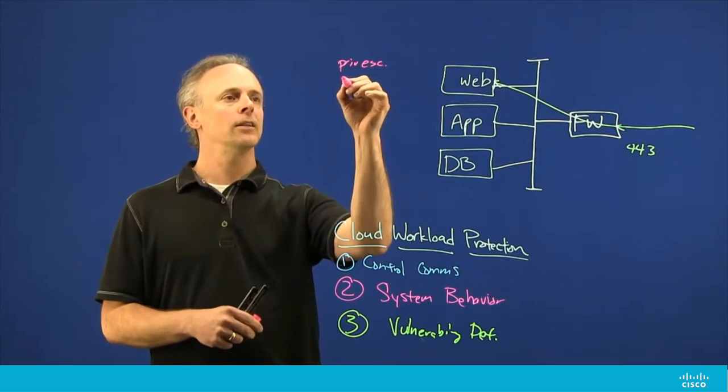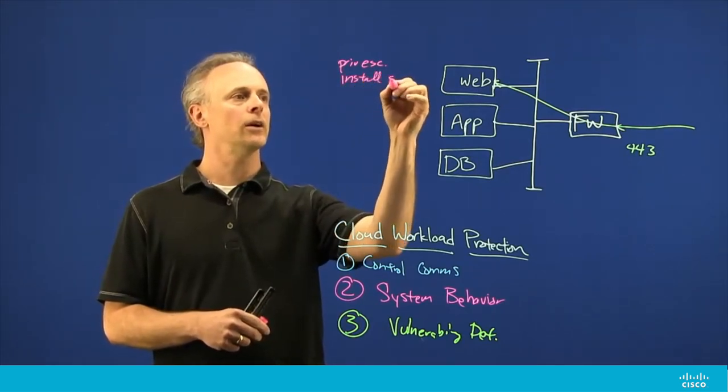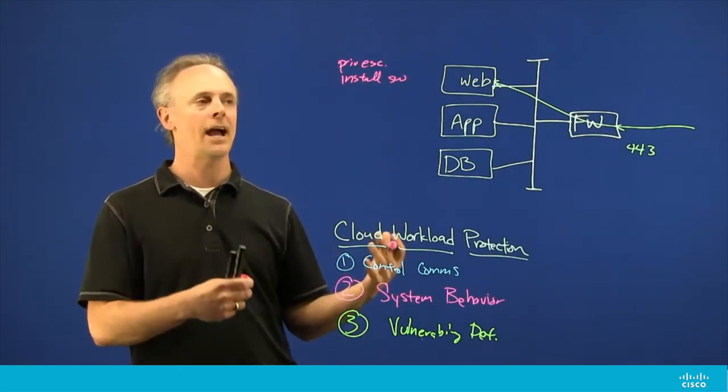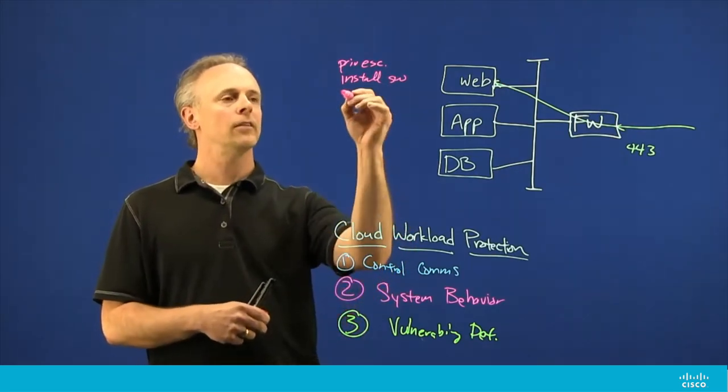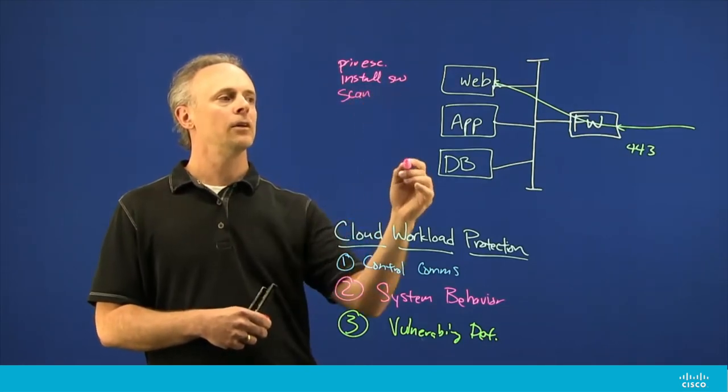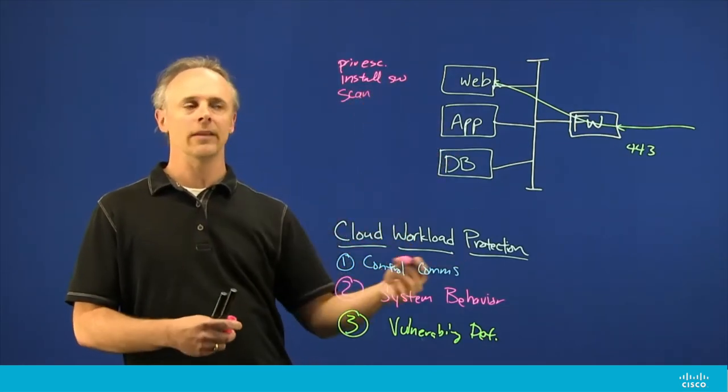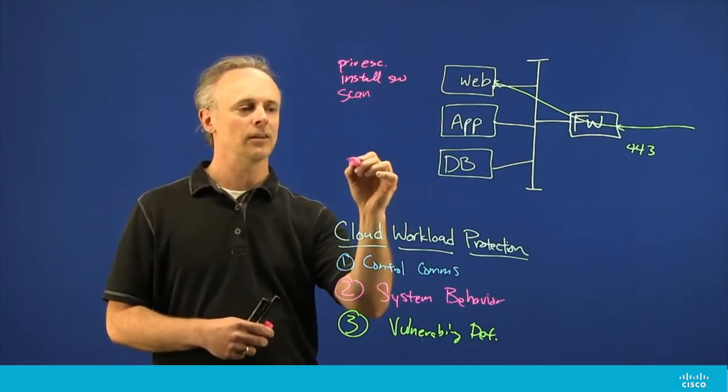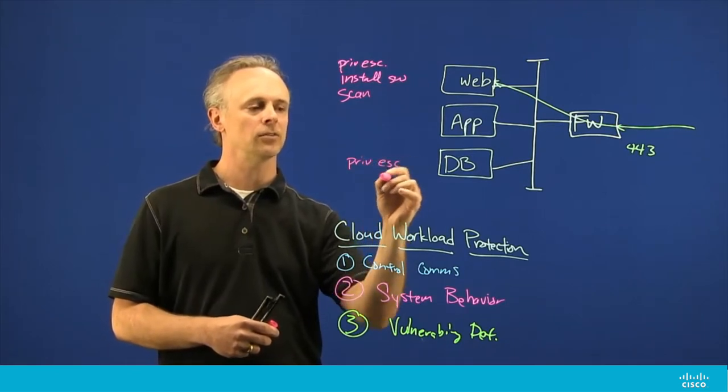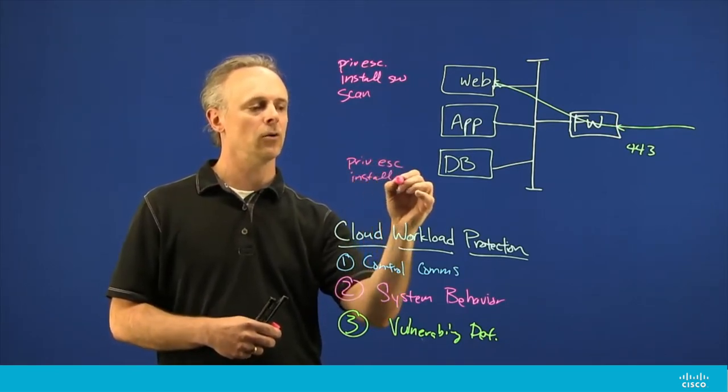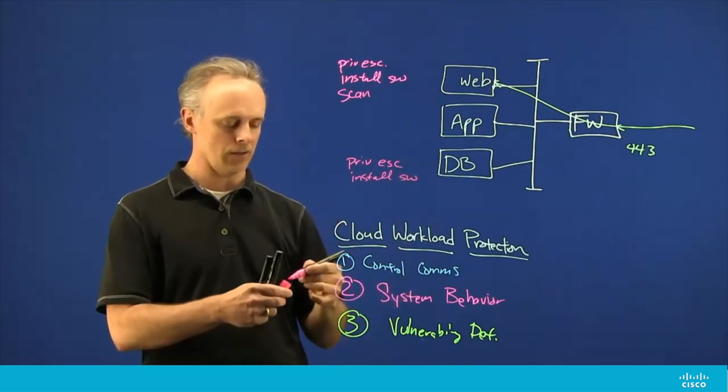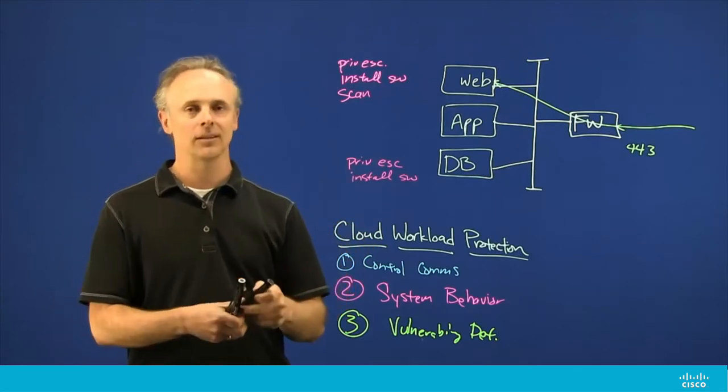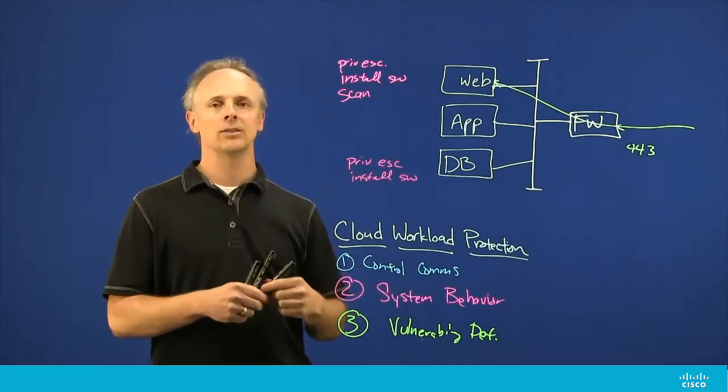Once they escalate their privilege, they can install software like scanning software or other hacker tools. Once they install that software, then they can start scanning for other systems on that network. Once they have access to the other systems on that network, they can rinse and repeat and do privilege escalation, maybe install some software on another node, and basically do whatever they wish at that point.